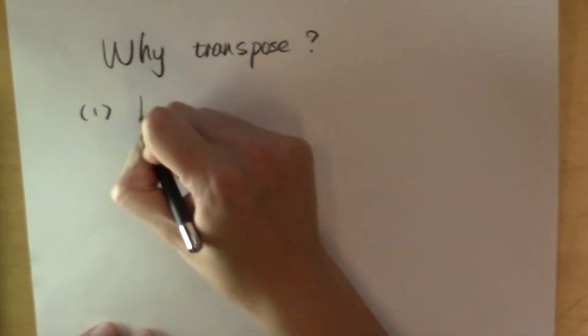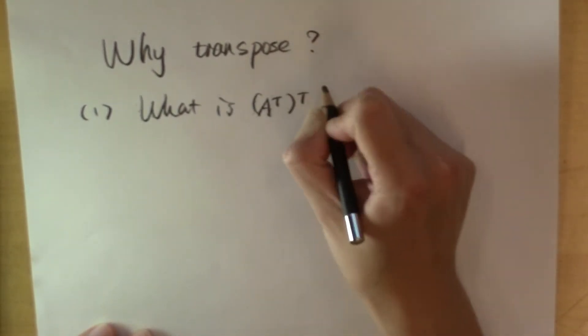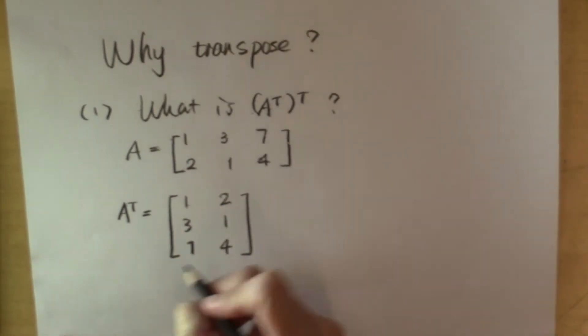To see this, let me ask you, what is the transpose of A transpose? For example, in this example, the transpose of A transpose is going to be the first row is the first column transposed.